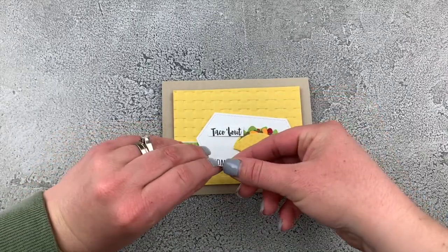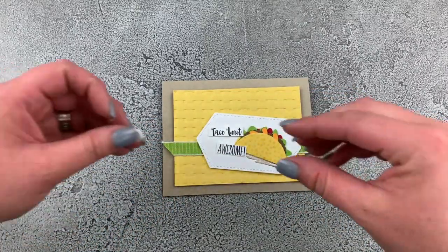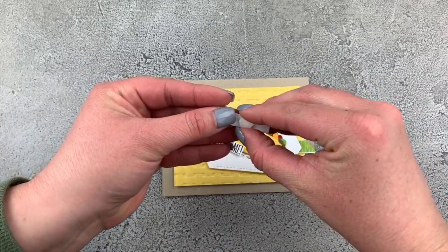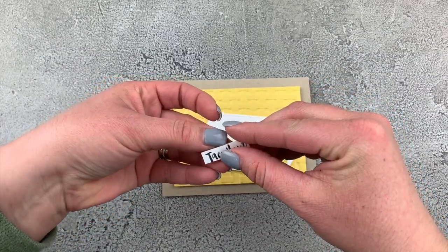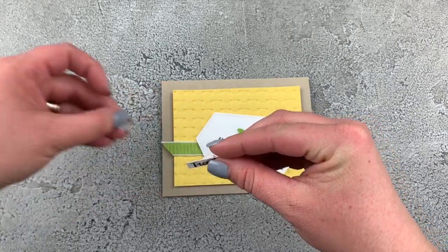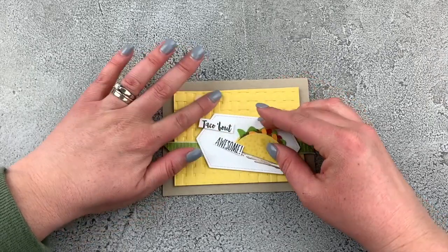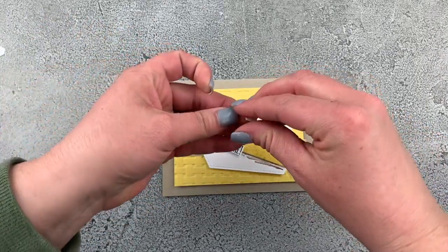Our last step is putting our sentiment onto our card front. We're going to do that with some dimensionals. I'm just putting a dimensional on the back of each piece of our sentiment - so we have 'taco bout' and then the word 'awesome.'